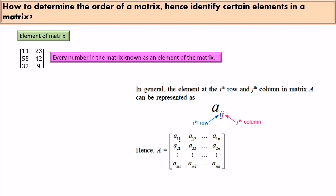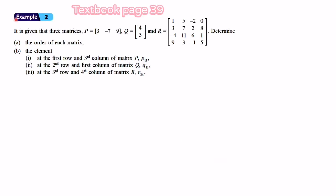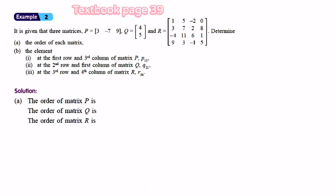Example 2: Given that matrix P equals [3, -7, 9], matrix Q equals [4, 5] as a column, and matrix R is a 4 by 4 matrix — determine the order of each matrix. For P, we have one row and three columns, so the order of matrix P is 1 by 3. For Q, we have two rows and one column, so the order of matrix Q is 2 by 1.